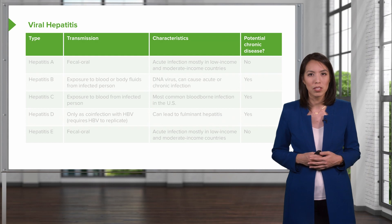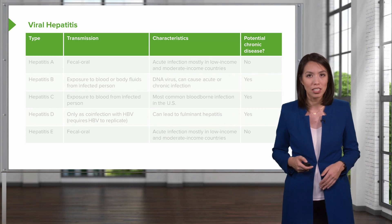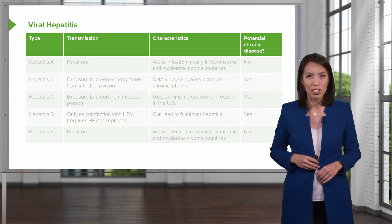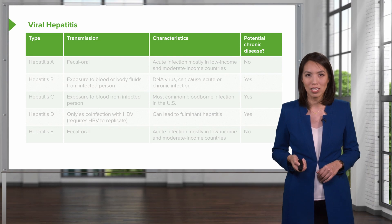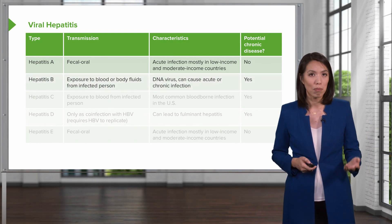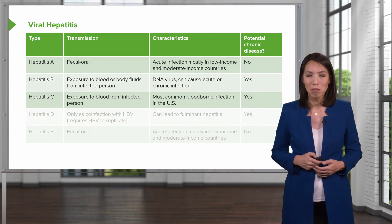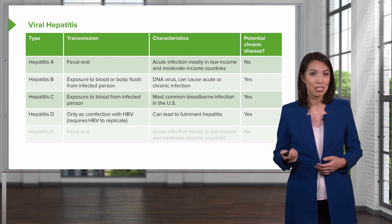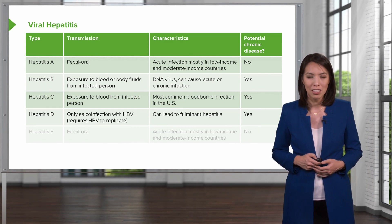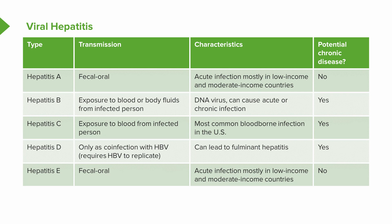Before we go into the hepatitis B serologies, let's step back and talk about the various types of hepatitis. Hepatitis A is fecal-oral transmission and does not cause chronic disease. Hepatitis B is transmitted by exposure to blood or body fluids. Hepatitis C can be transmitted by exposure to blood from an infected person. Hepatitis D only occurs as a co-infection with hepatitis B, since it depends on hepatitis B to replicate. Hepatitis E, like A, is fecal-oral transmission. Importantly, both hepatitis A and E do not have the potential to cause chronic disease.